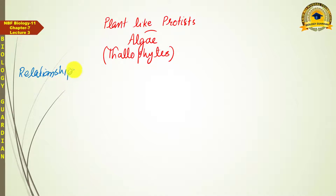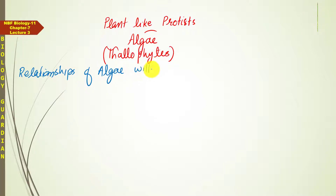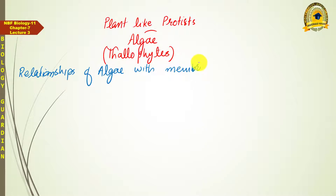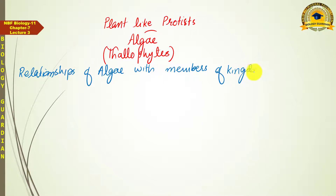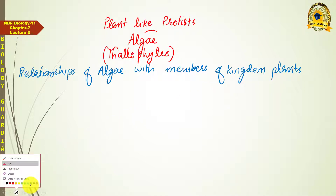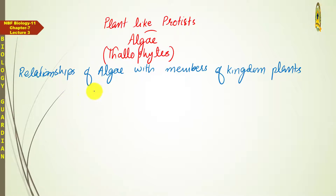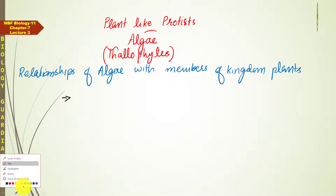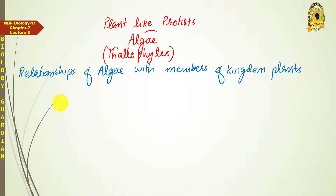Let us now discuss the relationship of algae with members of Kingdom Plantae. The reason algae were placed with plants was that their cell structure closely matches that of plants. As far as their cell structure is concerned, they resemble plants very closely.